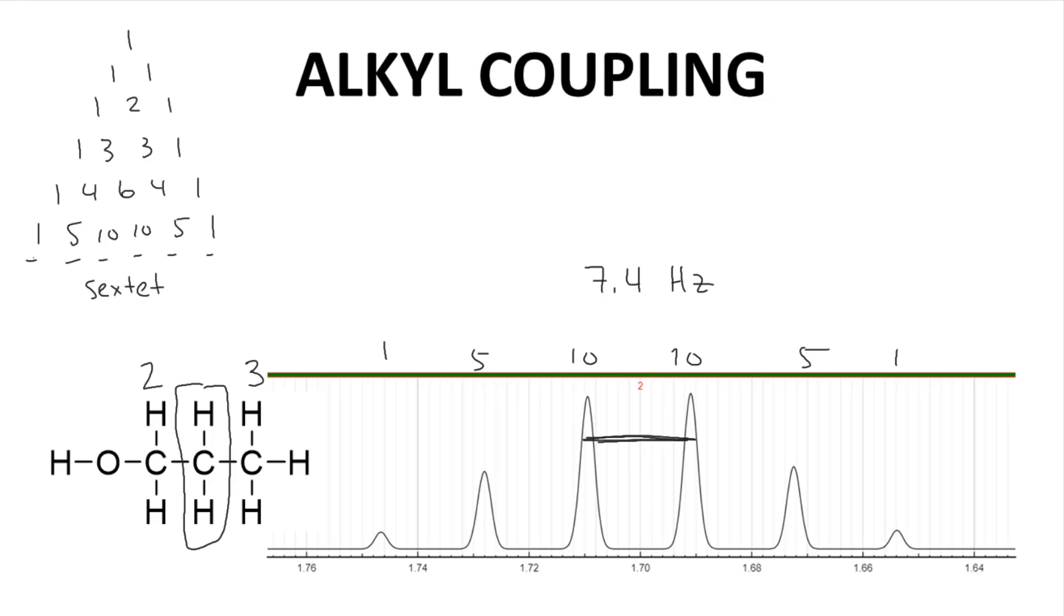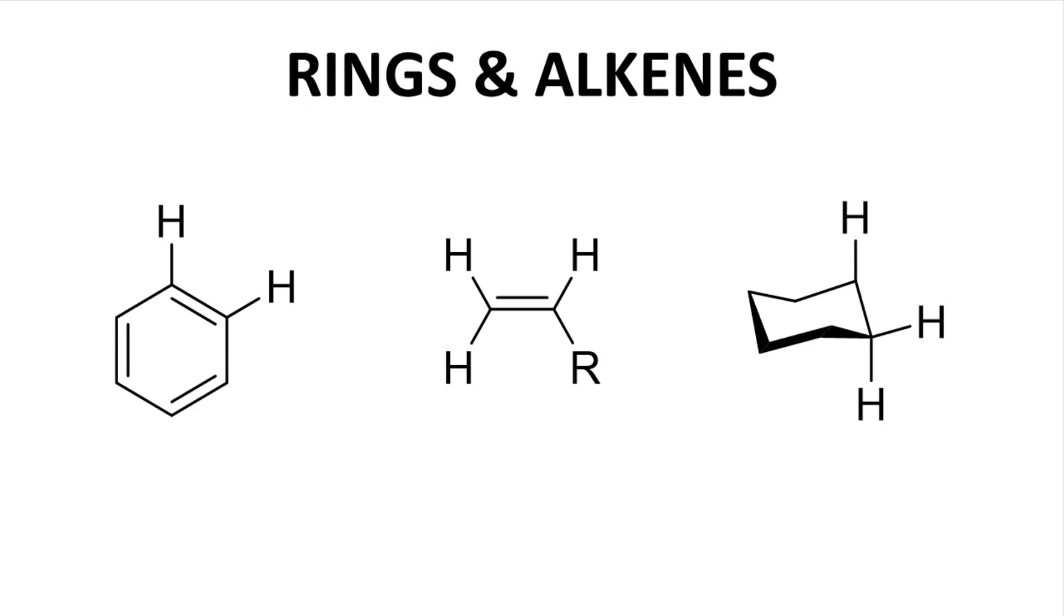How about other types of molecules? Here are some rings and alkenes. All of these are notable because the conformation of the molecule is more rigid, so the dihedral angles between the neighboring hydrogens is relatively fixed, and the Karplus equation becomes more relevant.